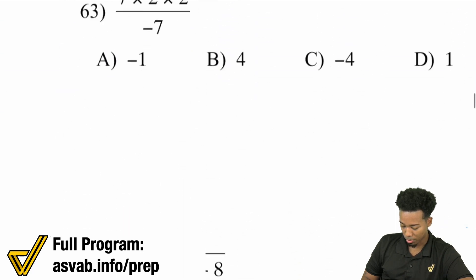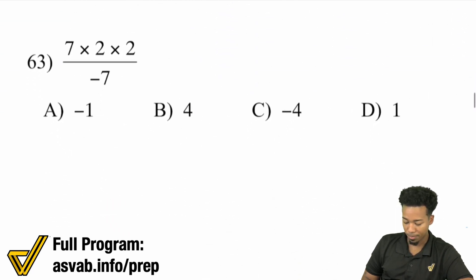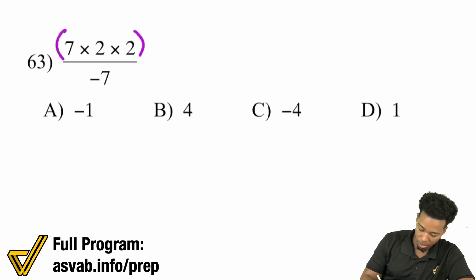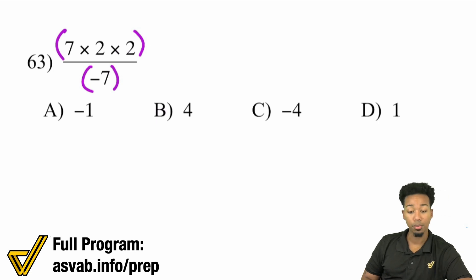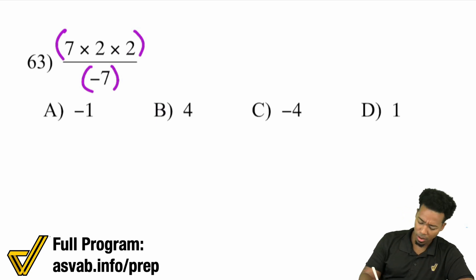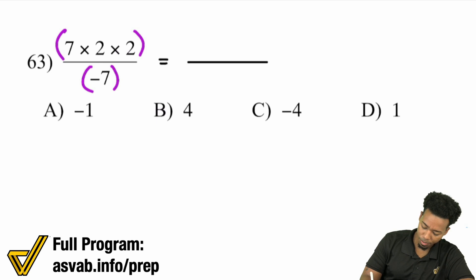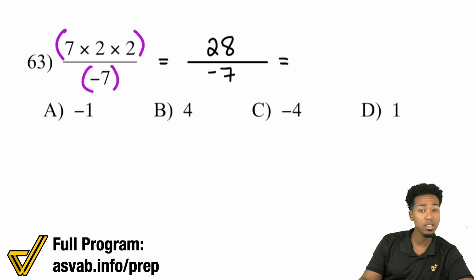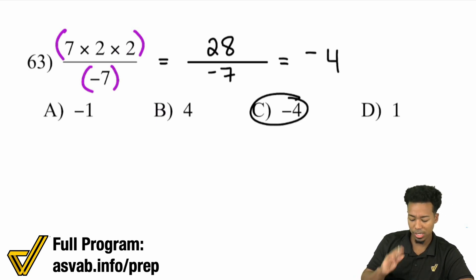The entire numerator is its own group and the denominator is its own group — you're basically dividing the entire numerator by the entire denominator. One way: multiply everything up top together. 7 times 2 is 14, times 2 is 28, divided by negative 7. A positive divided by a negative is a negative, and 28 divided by 7 is 4 — answer C, negative 4.